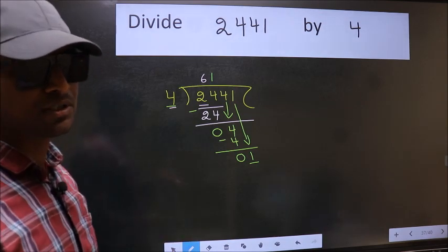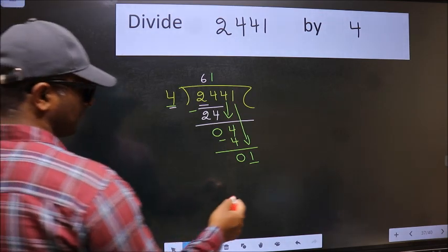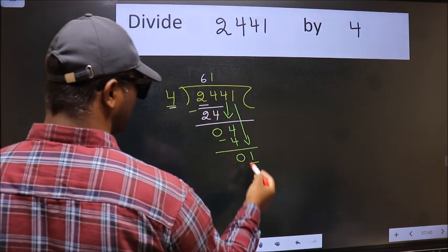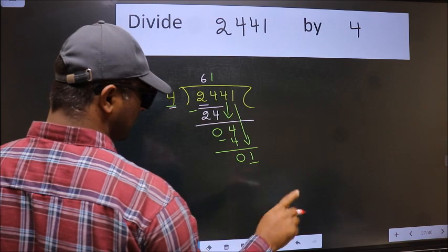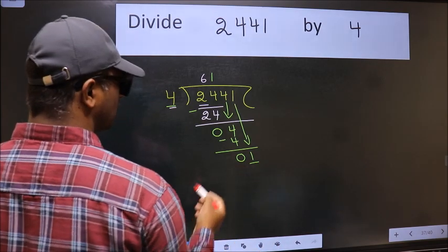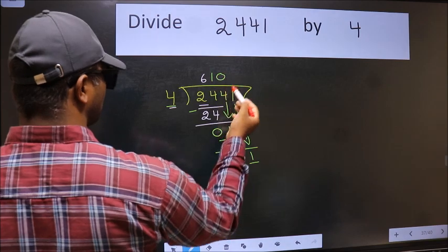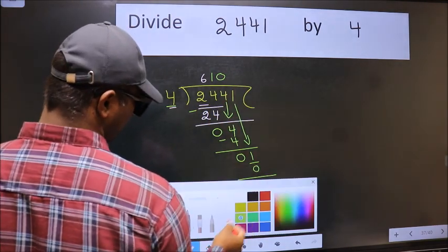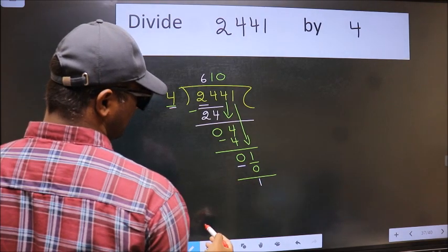Instead of that, what you should think of doing is: which number should we take here? If I take 1, we will get 4, but 4 is larger than 1. So what we should do is take 0. 4 into 0 is 0. Now we should subtract. We get 1.